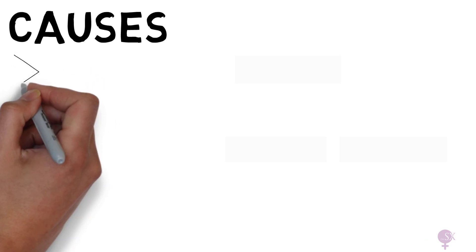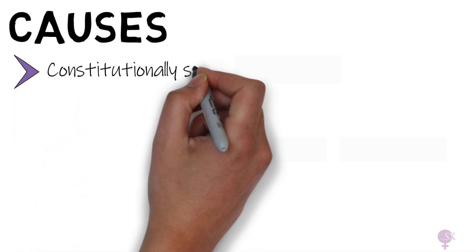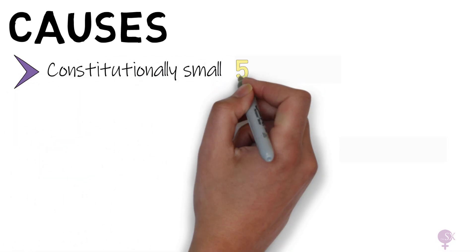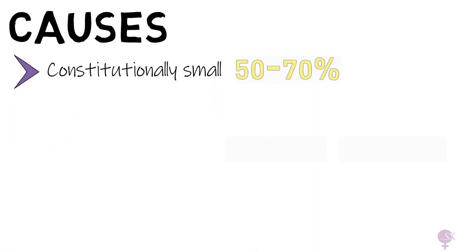Now let's have a look at some causes. As we said before, babies come in all shapes and sizes. We're not expecting a short petite couple to have the same size of baby as two six-footers — we are expecting them to have a smaller baby, which is normal for them. In fact, we know that 50 to 70 percent of SGA babies are constitutionally small.